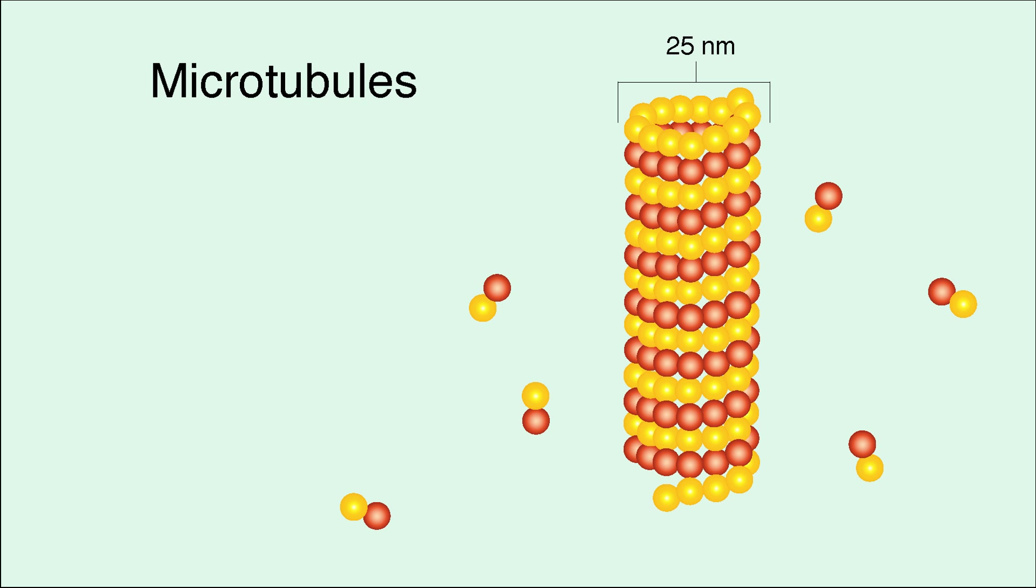Let's take a look at some of the structural features of microtubules. Microtubules are about 25 nanometers thick, making them the thickest and most rigid form of cytoskeletal element.